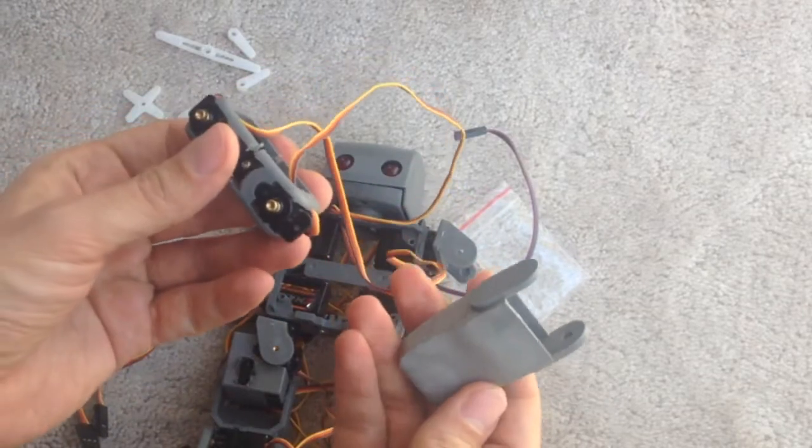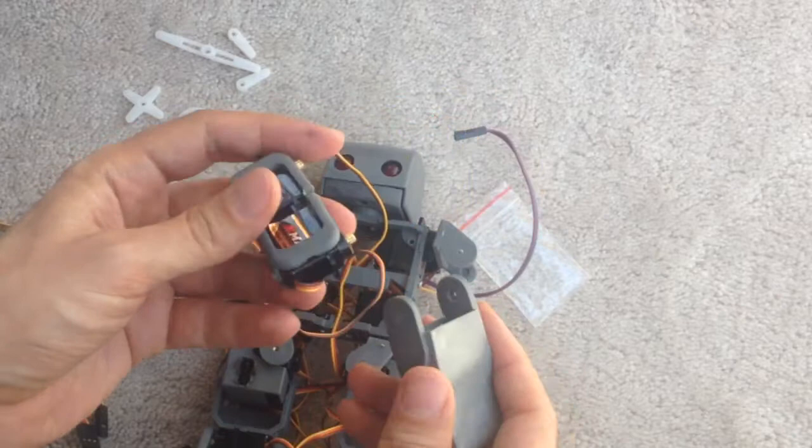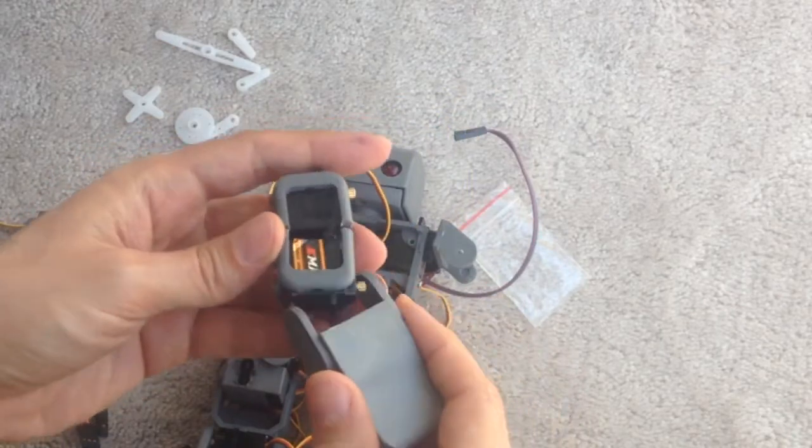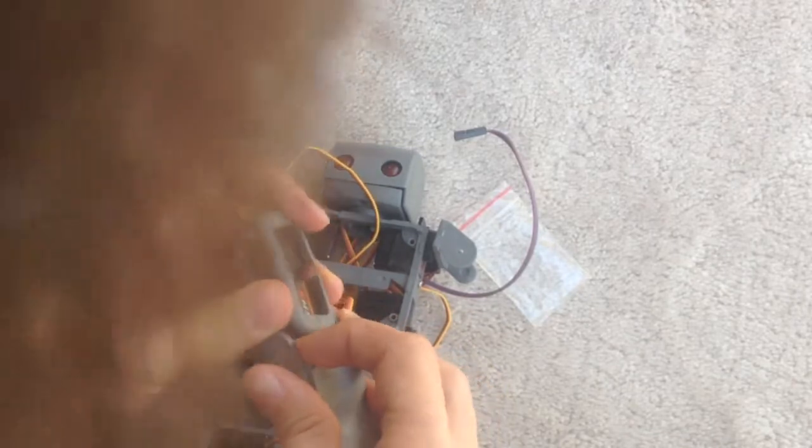So we're going to start with attaching the little hand here. It's very similar to most of the other attachments. There's a little thing in there. You basically just click it into place.